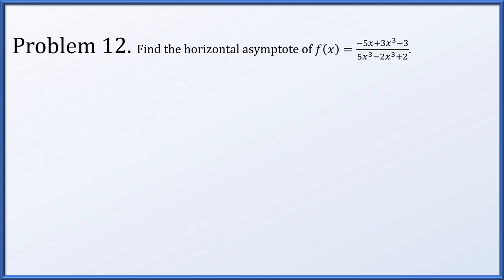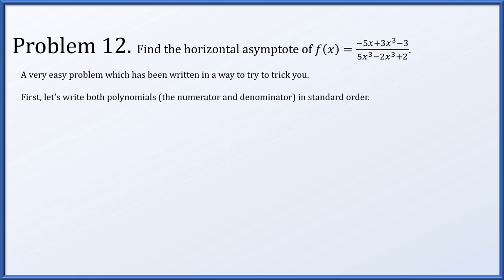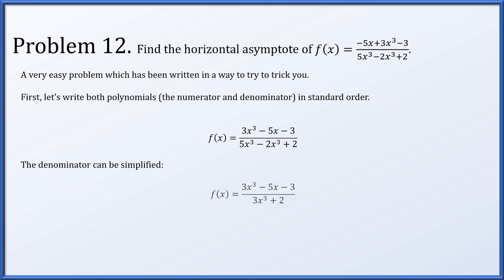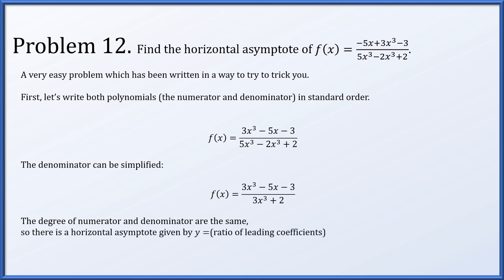In problem 12, find the horizontal asymptote of f(x) equals (negative 5x plus 3x cubed minus 3) divided by (5x cubed minus 2x cubed plus 2). Writing both polynomials in standard order, the numerator becomes 3x cubed minus 5x minus 3. In the denominator, the two cubic terms combine: 5x cubed minus 2x cubed equals 3x cubed, so f(x) equals (3x cubed minus 5x minus 3)/(3x cubed plus 2). With equal degree cubics, the horizontal asymptote is the ratio of leading coefficients: y equals 3/3 equals 1.